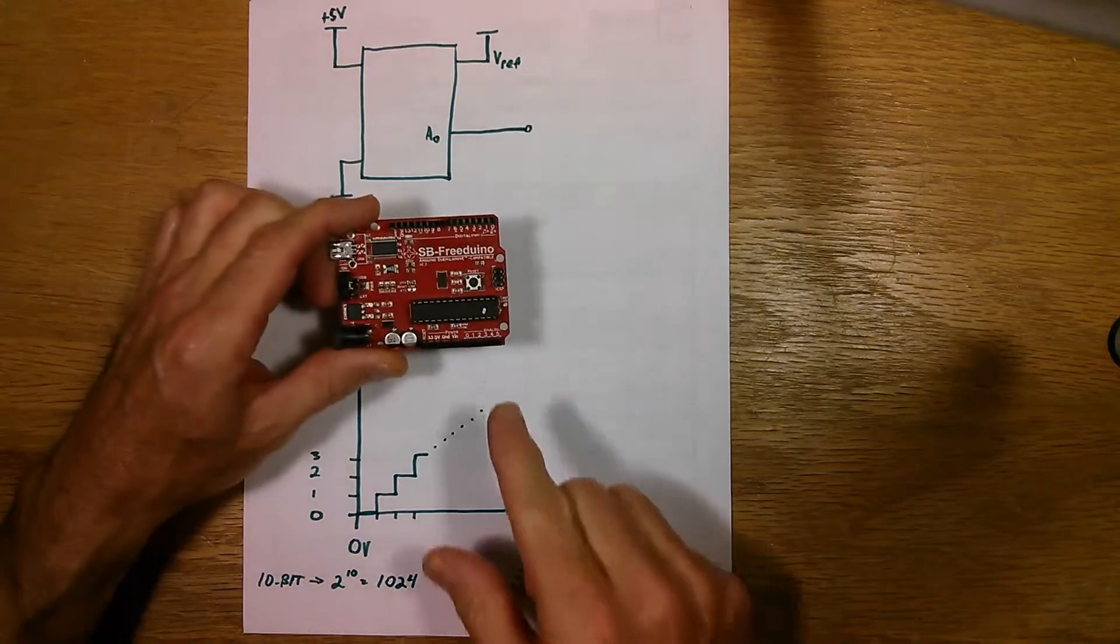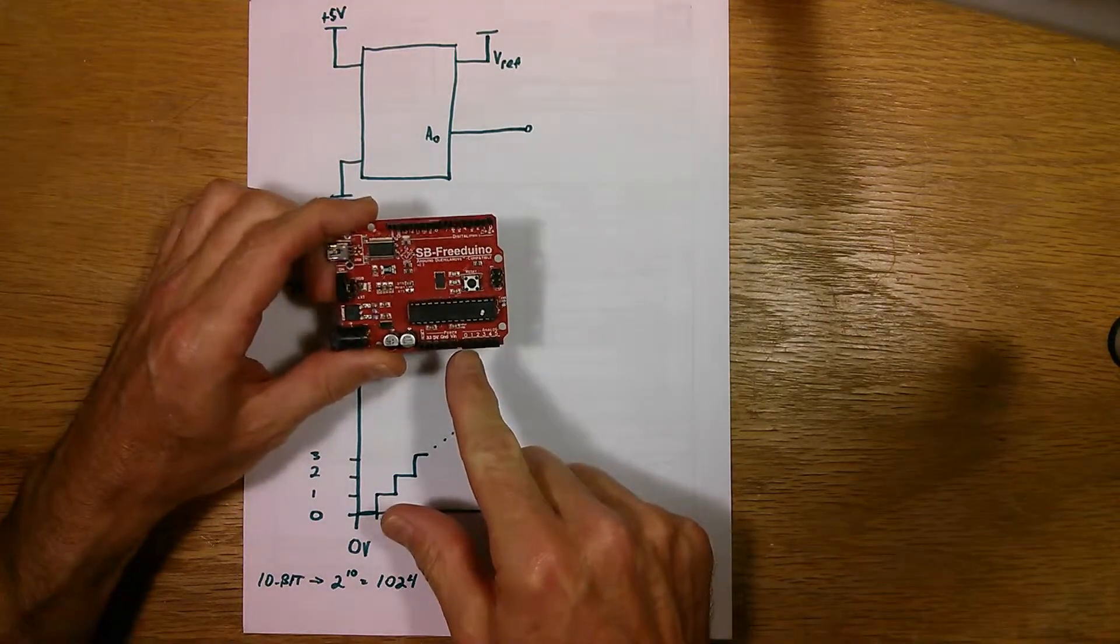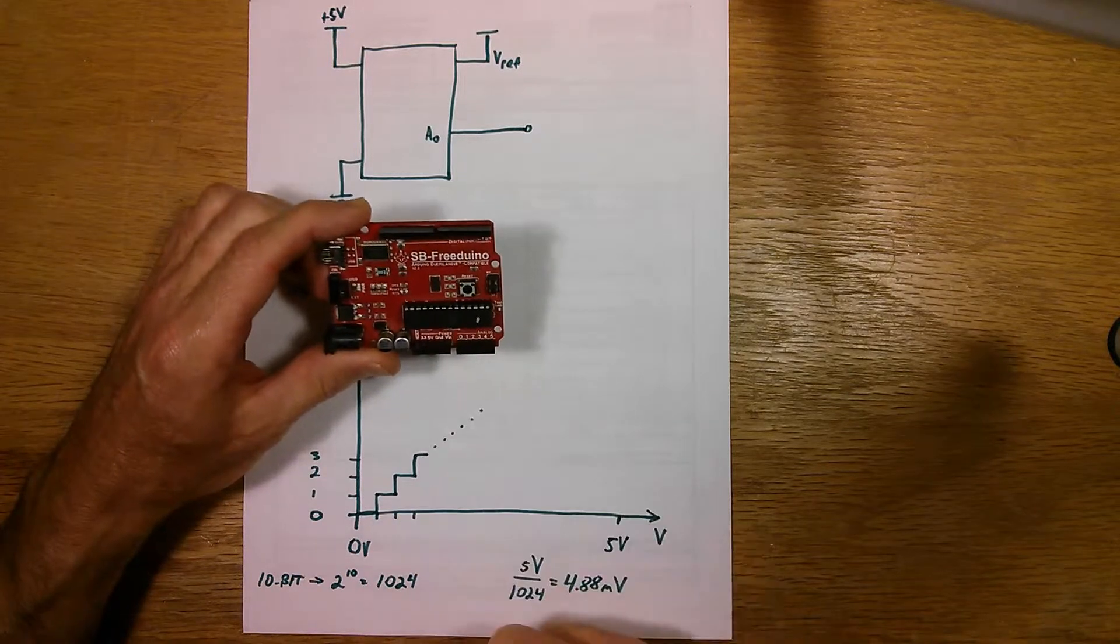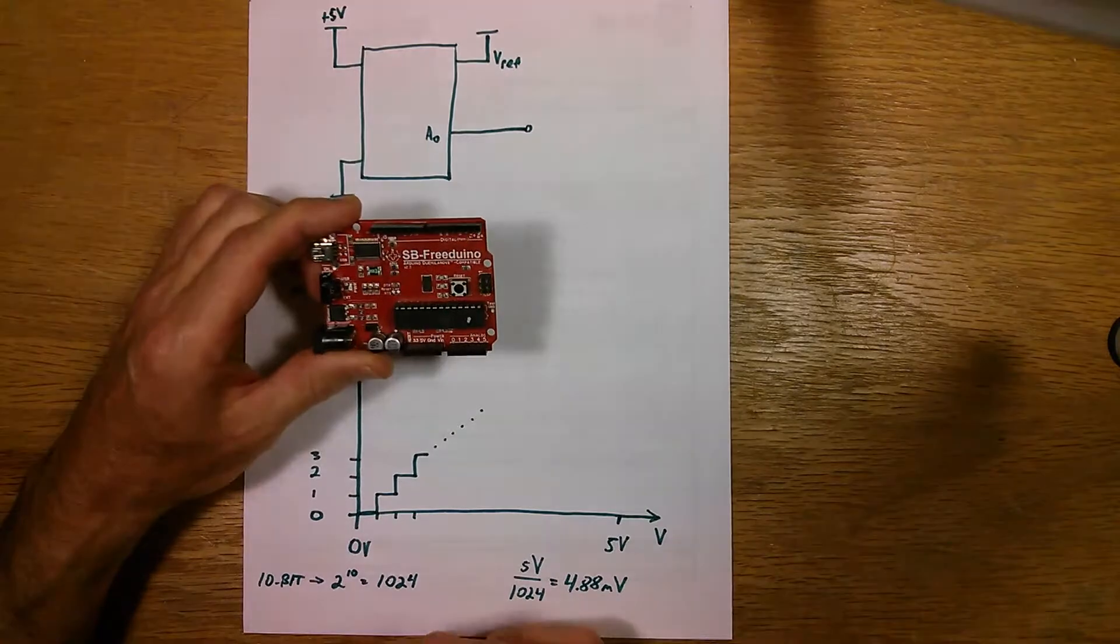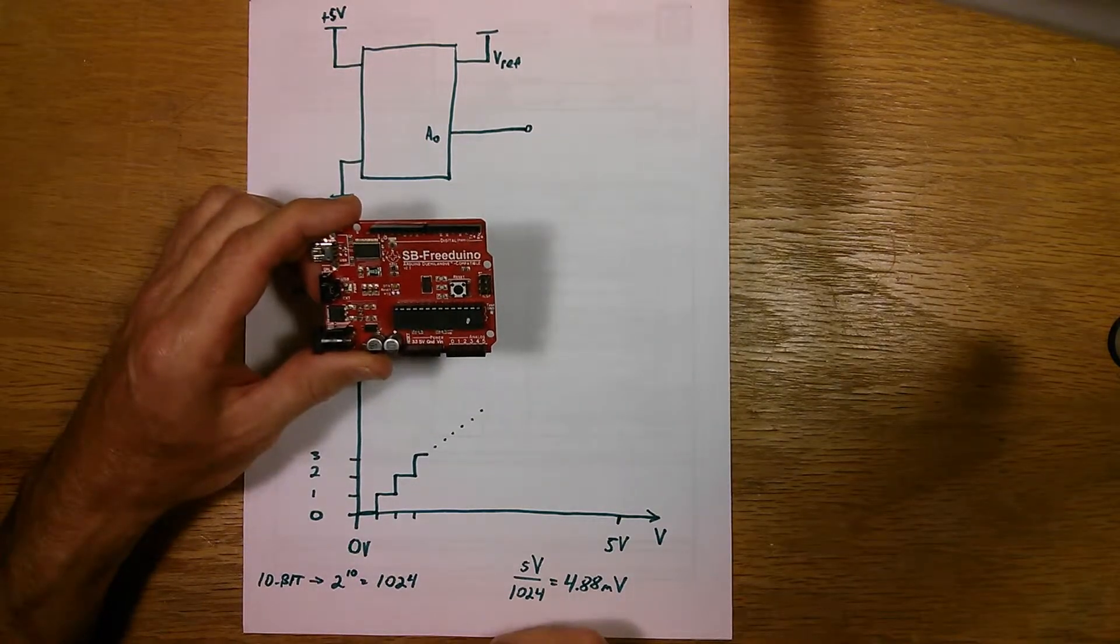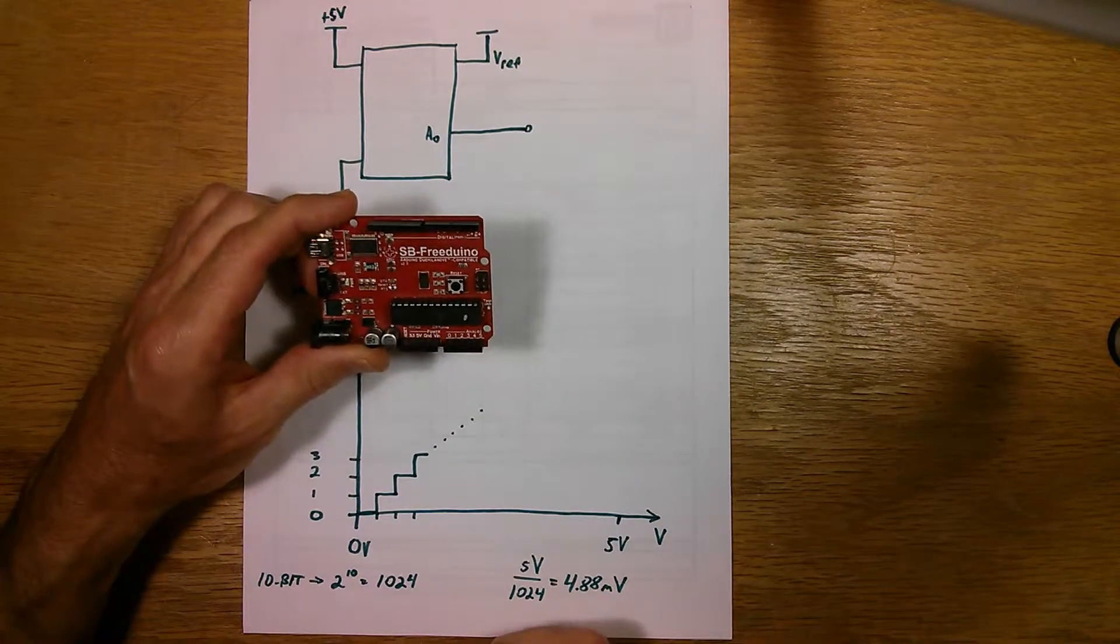The Arduino has six of them, they're long here, and they're labeled A0 through A5. And they're just like any of the other I/O pins here. They can be digital inputs and digital output pins as well.